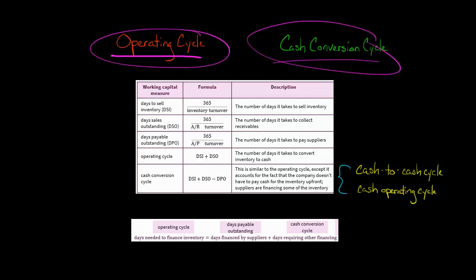Let me show you how these are calculated. The operating cycle is just the sum of the days to sell inventory and days sales outstanding. Days sales outstanding is how long it takes the company to collect a credit sale made to a customer. So if they sell to a customer, bill the customer, and the customer pays 28 days later, that would be days sales outstanding. So the operating cycle is telling you the number of days it takes this company to sell the inventory and then get cash from the customer.